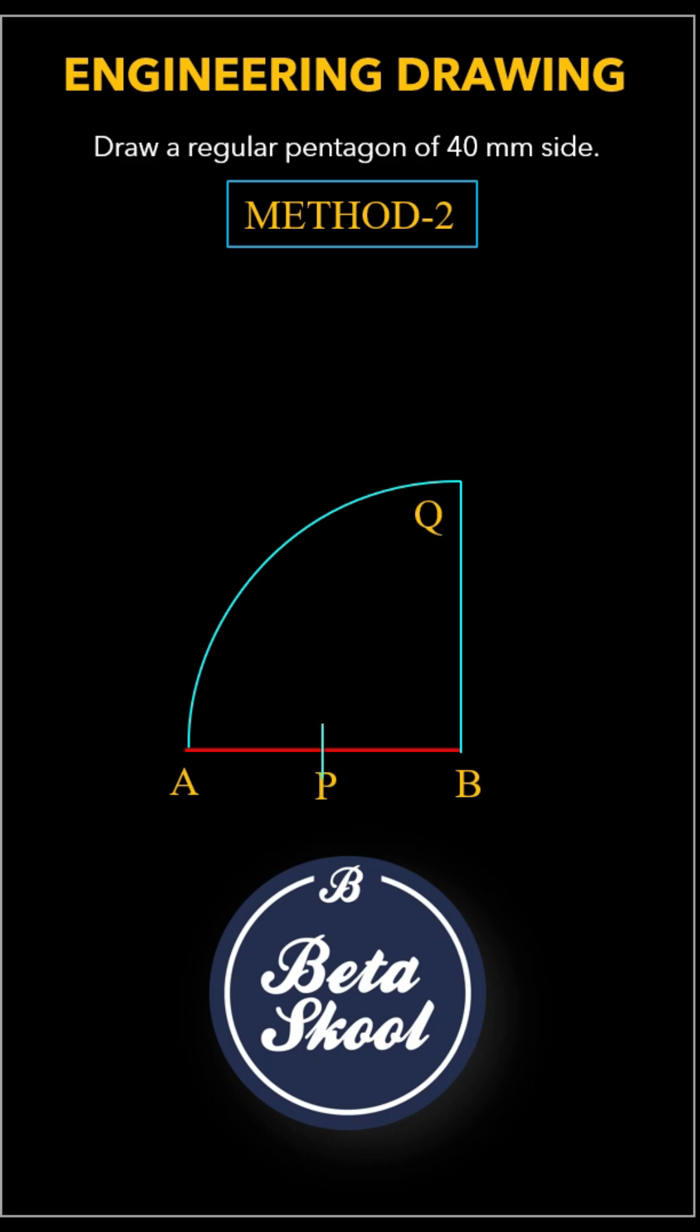Find the midpoint of AB at P. With your compass, place the needle at point P and set the radius equal to PQ. Draw an arc to intersect the extension of line AB at M. This gives us the diagonal length of the pentagon.